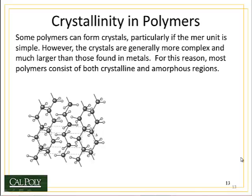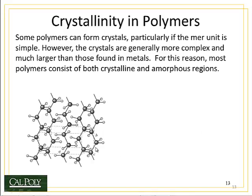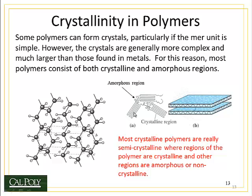It turns out that polymers, which are these long chains of zigzagging atoms going back and forth, can form crystals as well as metals. But the problem is that because their molecules are so long, they can't form perfect crystals. So instead, you end up with a typically semi-crystalline structure. Regions where the molecules are lined up as crystals, zigzagging back and forth through the crystal, where the unit cell would look much like this picture for the unit cell of polyethylene on the left.